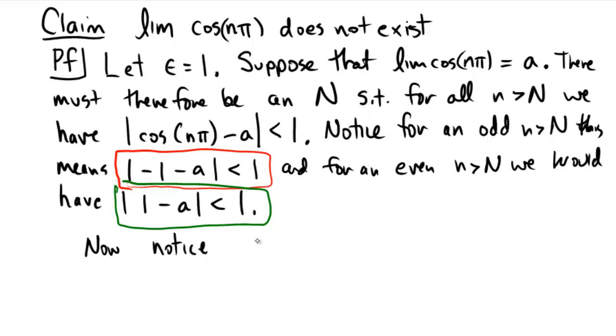Alright, so consider the number 2. What is 2 equal to? Well, 2 is equal to, of course, absolute value of 1 minus negative 1.